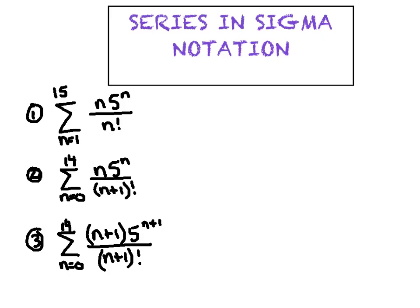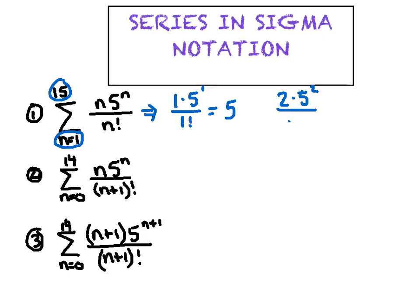When I say expand, I mean we're going to substitute the beginning value. You'll notice on this one the low number is a one. So the first thing I'm going to do is substitute a one in for all the n's. It's one times five to the first all over one factorial, which turns out to be five. So the first term is five. The second term would be two times five squared all over two factorial, giving me 25.